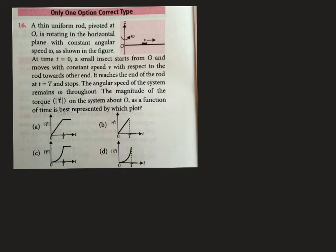A small insect starts from O and moves with constant speed v with respect to the rod towards the other end, reaches the end of the rod and stops. We need to find the angular speed of the system and the magnitude of the torque.